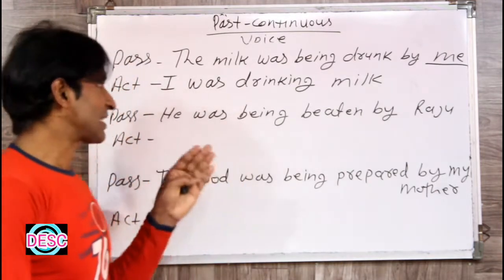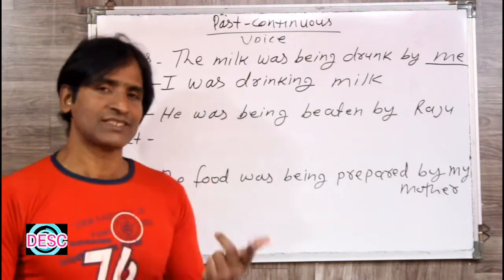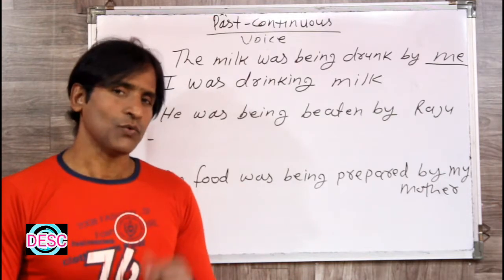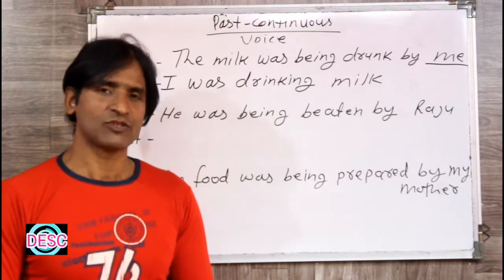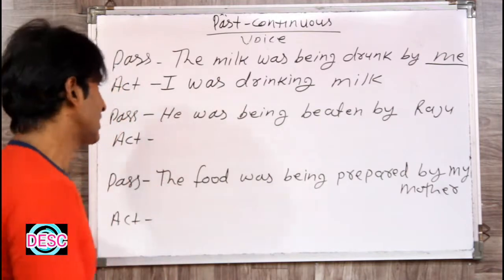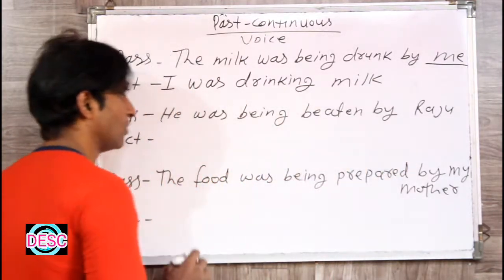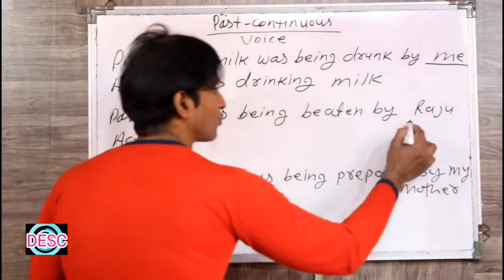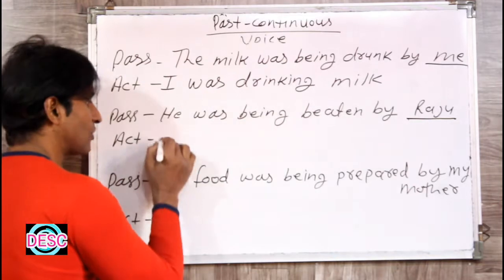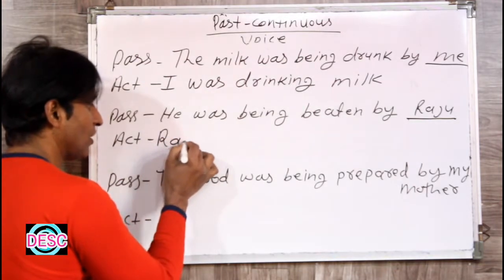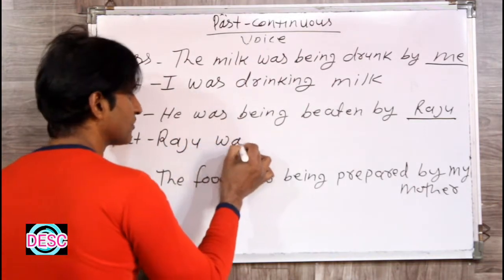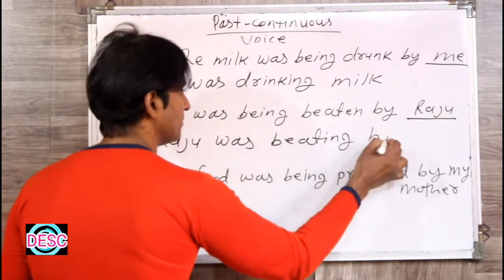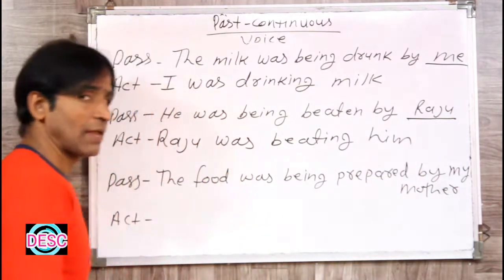Jo aapko active banate waqt dhyan rakhna hai — us tense ka kya formula hai, sentence banane ka kya making formula hai, woh yaad rehna chahiye, tabhi aap achhi tarah se active mein usko turn kar sakte ho. 'He was being bitten by Raju.' Voh Raju ke dwara peeta ja raha tha. Raju is the object in this sentence, to Raju subject mein aa jayega: Raju was beating him.